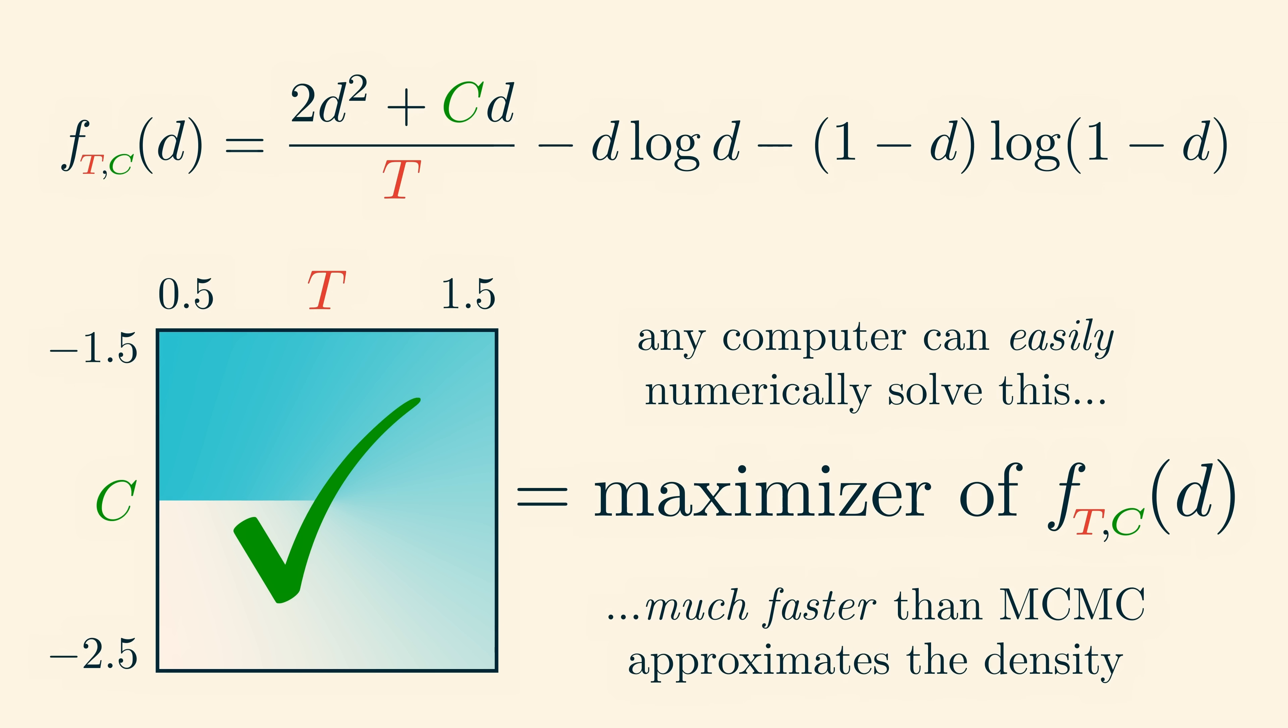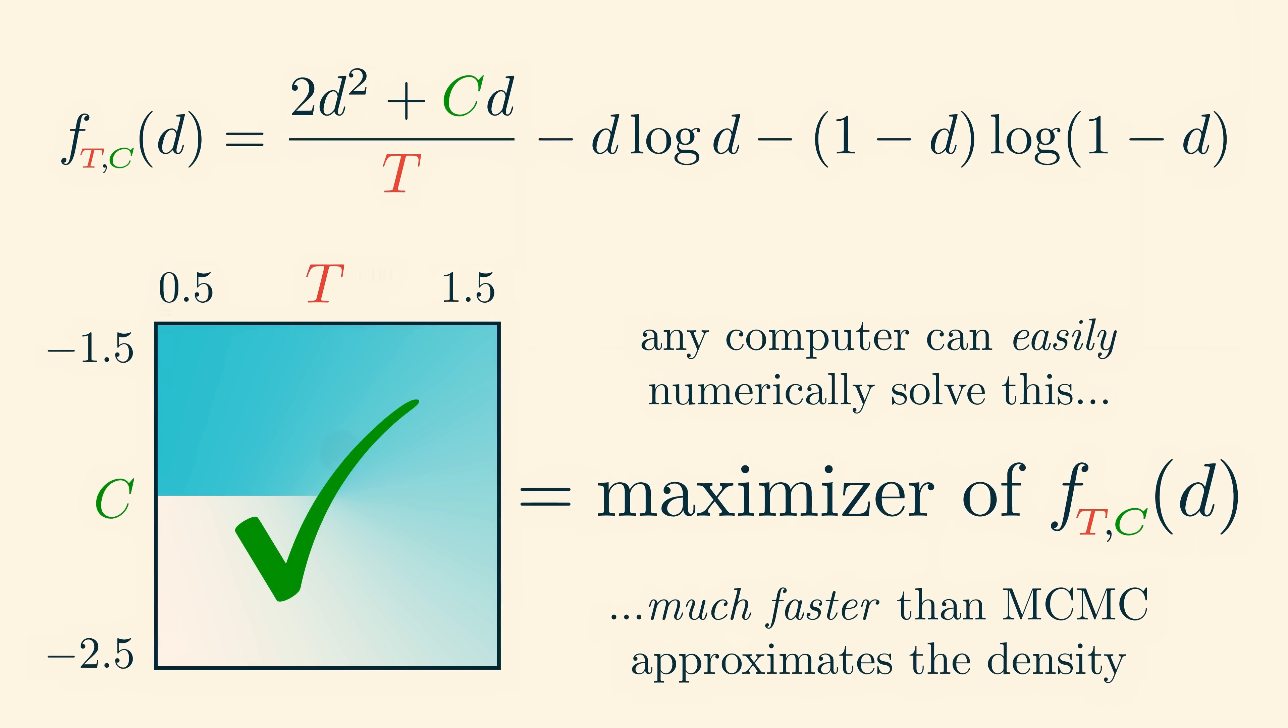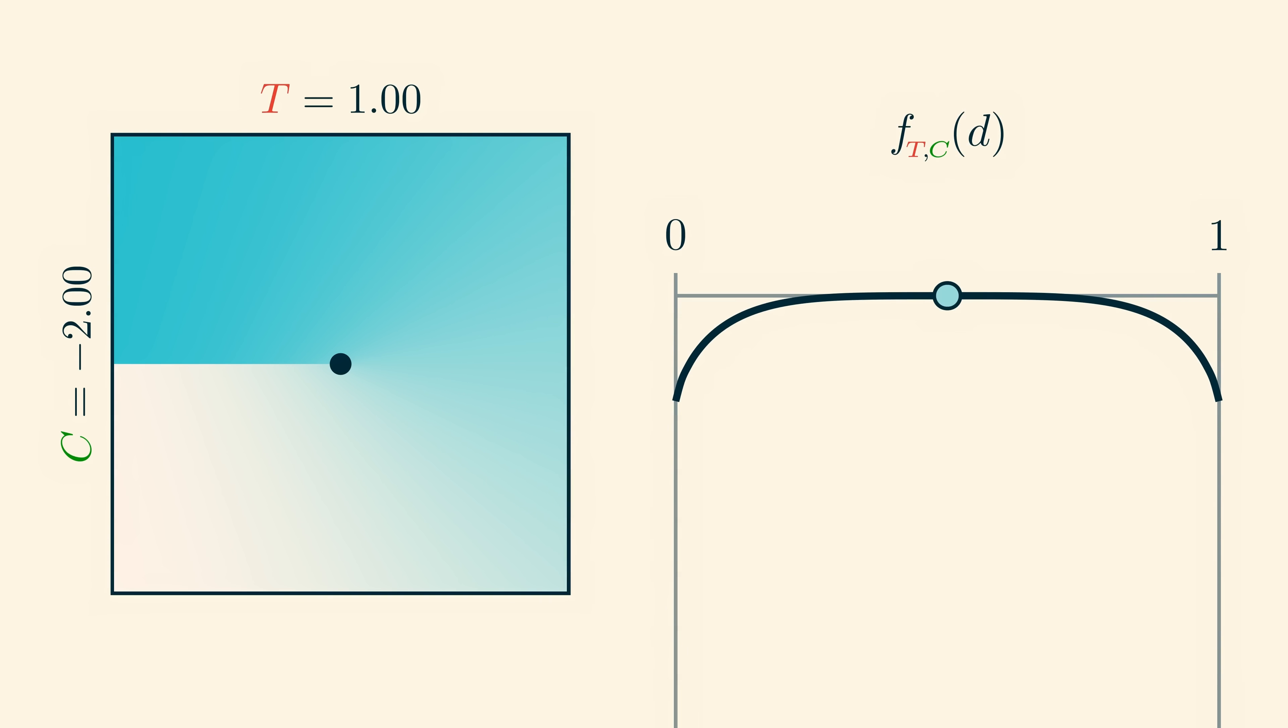The formula for f tc can also give us some intuition for why a phase transition happens. Here's a plot of this function, although I'm actually shifting it by the maximum value, so it's easier to follow the maximizer as we tweak the parameters. When the temperature t is high, as we vary the chemical potential c, we see that the maximizing density changes smoothly. This is the supercritical fluid phase, which smoothly interpolates between a liquid and a gas, with no phase transition.